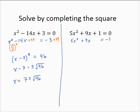Now I want to get this in the form x squared plus bx. So now I'm going to divide each term of the equation by 5. Yielding x squared plus 9 fifths x is equal to negative 1 fifth.